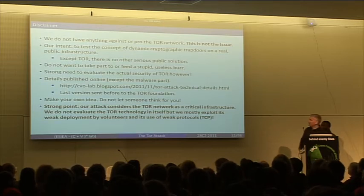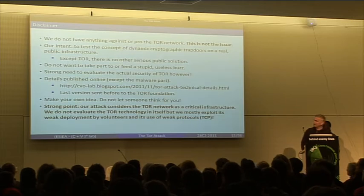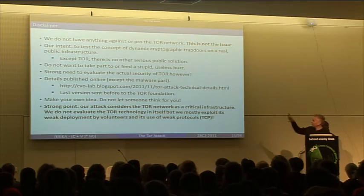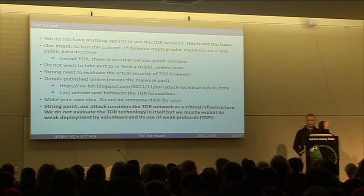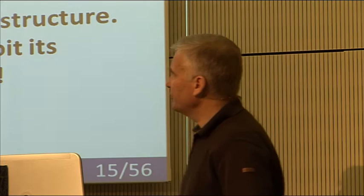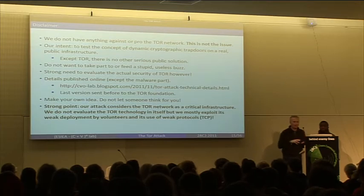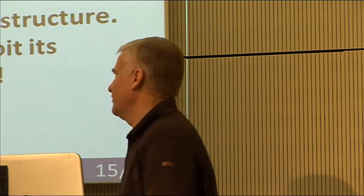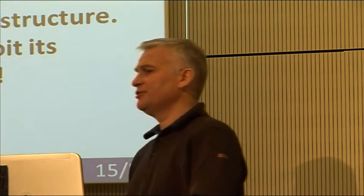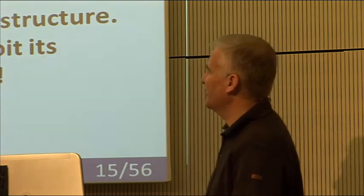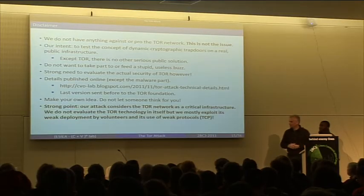You will find everything — the library, the Torexen library — the different data are available either on the wiki of the conference or on this link. Sean has developed a very interesting library. You have the Google Earth map of everything. So in fact, we have tried to consider the Tor network as a critical infrastructure. When you deploy some brick, you don't know whether you will have local weaknesses and how to exploit them. So in fact, it is not the Tor technology in itself that we analyse. In fact, it is the fact that we explore the network being deployed by volunteers using their own security, computer security, and of course using weak protocols.